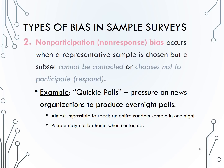A key feature of non-response bias is that someone is selected to be in the sample, but chooses not to respond or cannot be contacted. Volunteer samples, where we have not selected the sample but are just gathering information from people who volunteer, therefore fall under the category of selection bias instead of non-response bias.